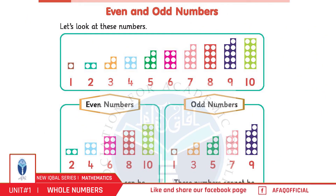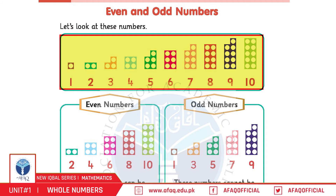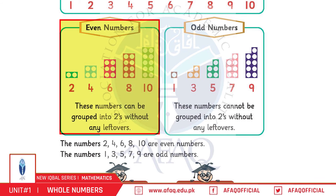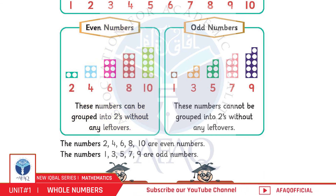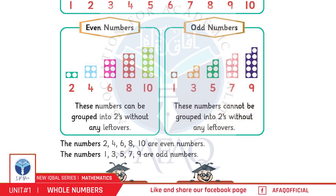Even and odd numbers, page 5. Baccho, in numbers ko dekhte hain: 1, 2, 3, 4, 5, 6, 7, 8, 9, and 10. Even numbers: 2, 4, 6, 8, and 10 — baccho, yeh woh numbers hain jiske do ke groups banaye ja sakte hain. Odd numbers: 1, 3, 5, 7, and 9 — baccho, yeh woh numbers hain jiske do ke groups nahi banaye ja sakte.